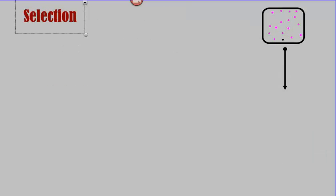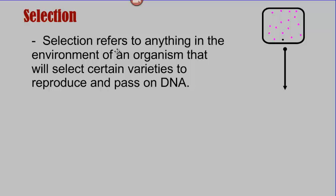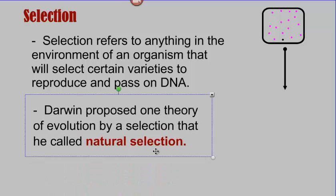The second concept is the idea of selection. There has to be a process that makes a selection among those varieties. So anything in the environment of an organism, and we'll give you some examples in class, that can select certain varieties to reproduce and pass on their DNA is a force of selection. Darwin gave one possible scenario for that selection. He called it natural selection, in which the environment selects certain individuals. But it's not the only kind of selection. There's actually other kinds of selection.